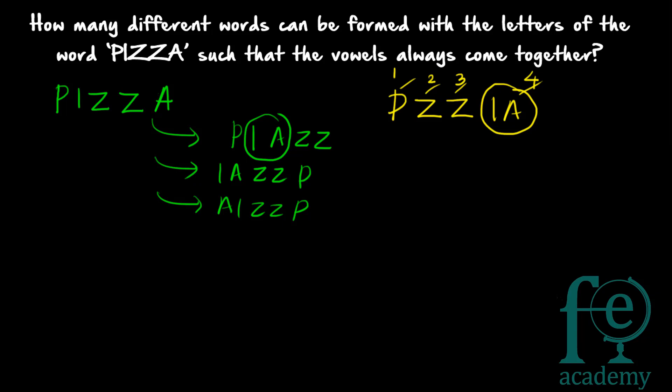Four different letters can be arranged in 4 factorial ways. You have already learned that to arrange n things there are n factorial ways. Similarly, to arrange four items there are 4! ways. Now, I and A consist of two letters, and these two letters can be arranged in 2 factorial ways. So your solution will be 4! × 2!.